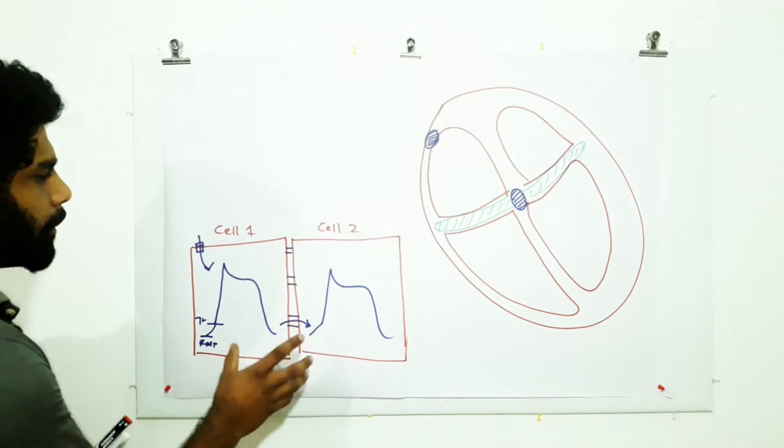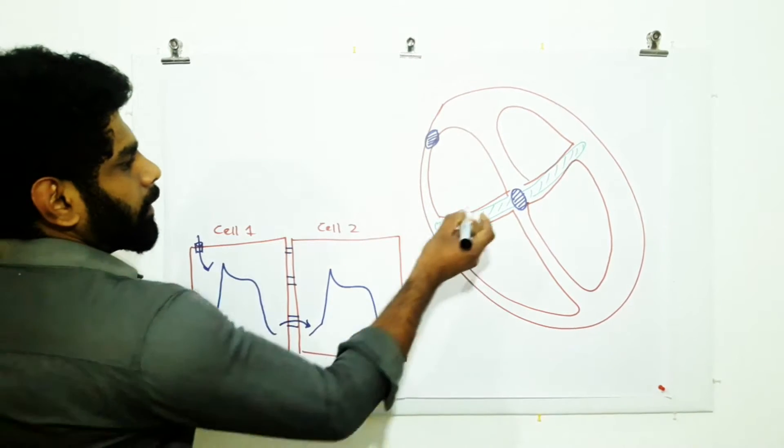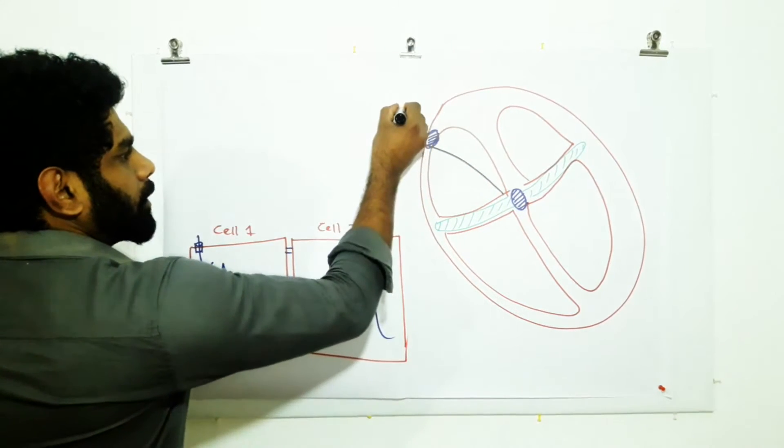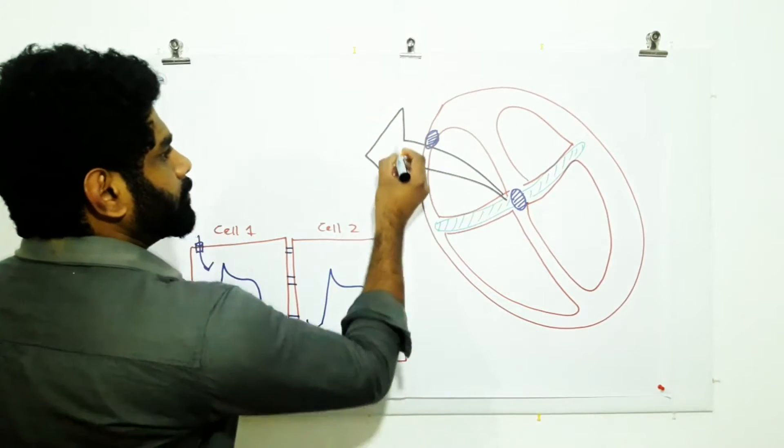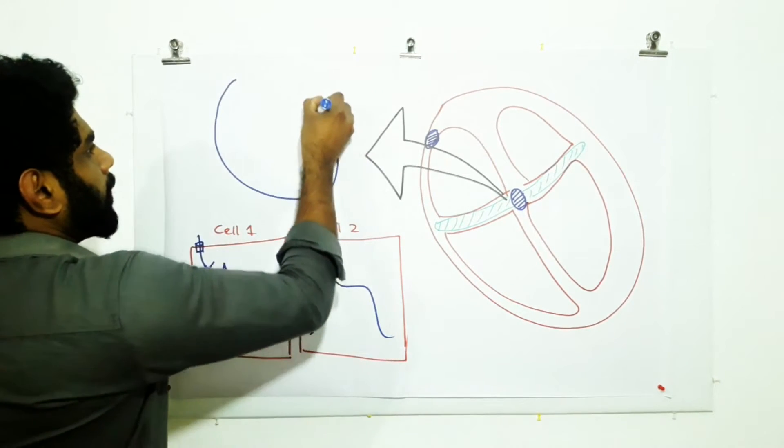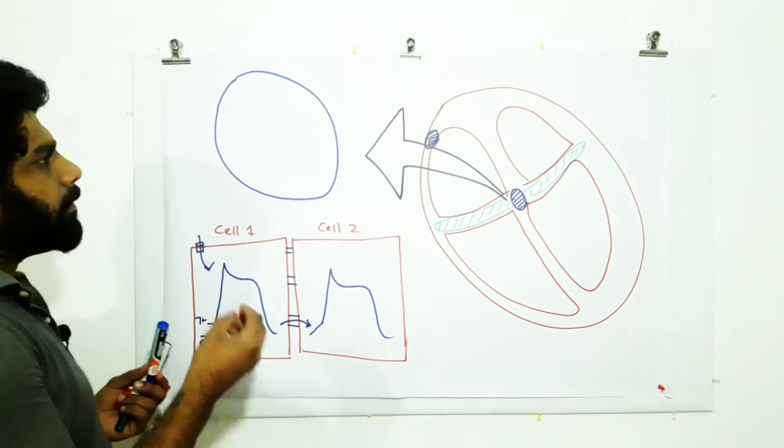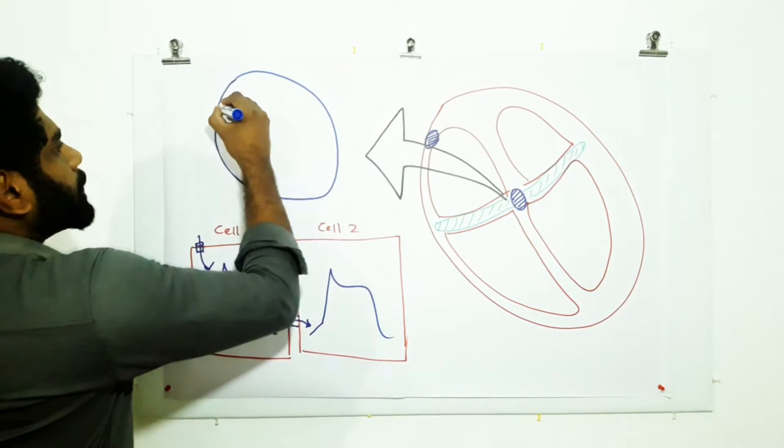The same thing happens in the AV node also. Here we have our AV node. This is our AV node. The AV node is made up of small cells.